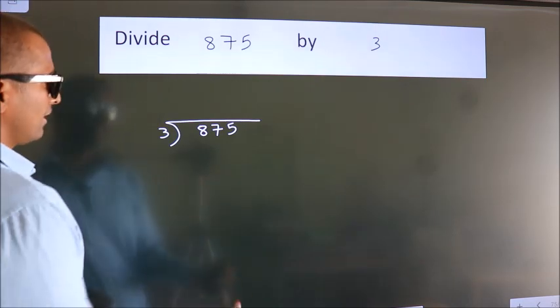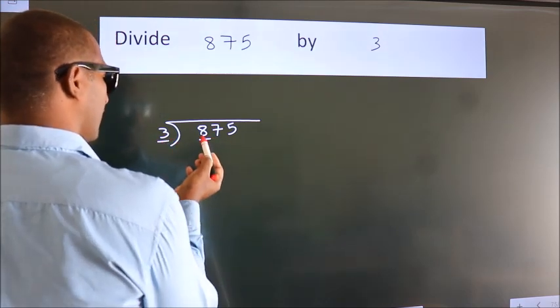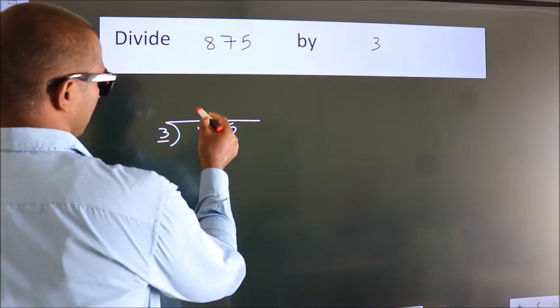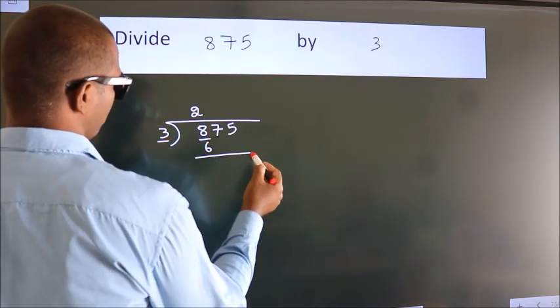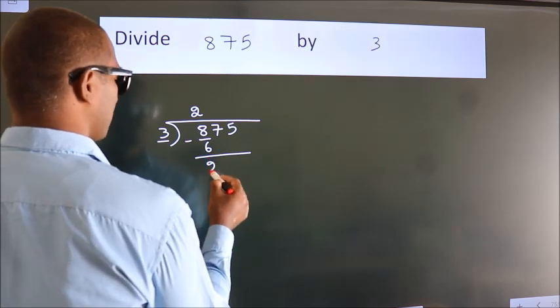Next, here we have 8, here 3. A number close to 8 in 3 table is 3 2s, 6. Now we should subtract, we get 2.